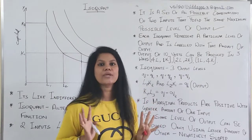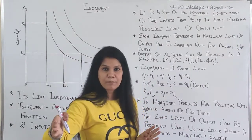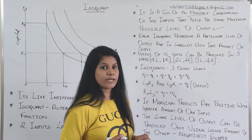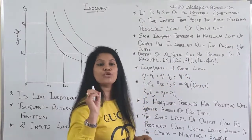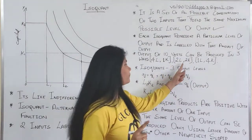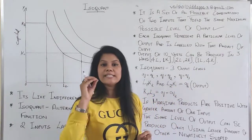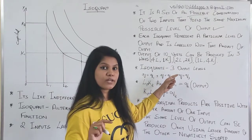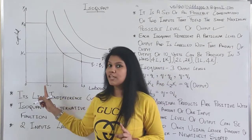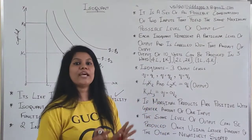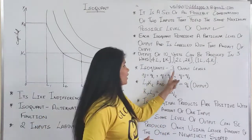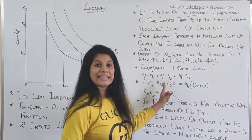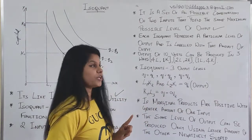Any of these combinations you can pick. It depends on your taste and preferences and what exactly your expectation is. Being a producer, you have the authority to decide which combination you want to pick. Any of these combinations gives the same level of output. So with different units of labor and different units of capital, the output will be almost the same.